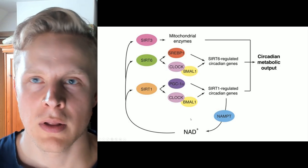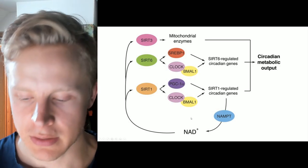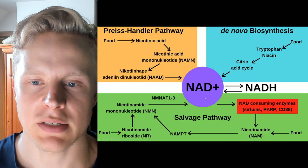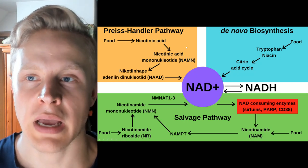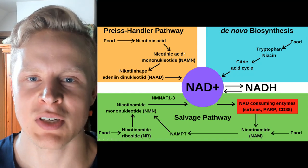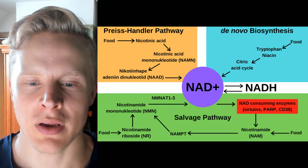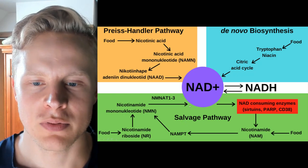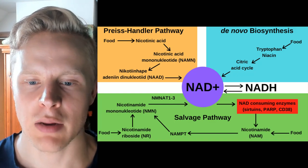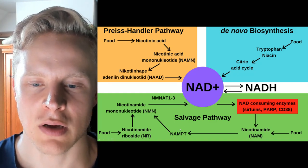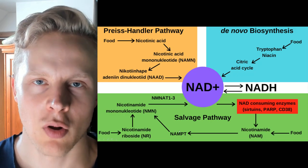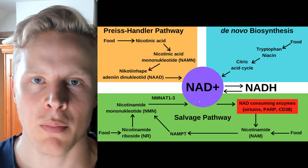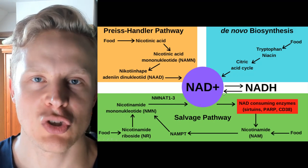The salvage pathway contributes up to about 80 or 90 percent of the NAD that you produce on a daily basis. So food is actually pretty insignificant in terms of how much NAD you have. Most of it is coming from the salvage pathway — the exercise you do, the time-restricted eating you have, the sleep that you get, and getting sunlight in terms of circadian rhythm alignment. NAMPT is kind of the bottleneck — if this gets messed up because of circadian rhythm misalignment, you're going to have a pretty drastic reduction in the potential of how much NAD you have.